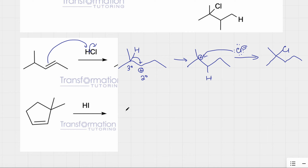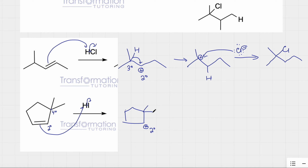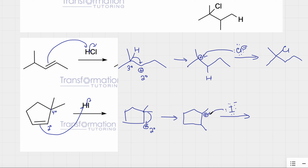Here again, the initial carbocation would be secondary, but right next to it is a quaternary carbon — more substituted. When I take the hydrogen and give electrons to iodine, the positive charge forms on the secondary carbon. Since this quaternary carbon has no hydrogens, I move a methyl group to the carbocation. The methyl migrates over, and the neighboring carbon now bears the positive charge. I add the iodide ion there, and that's my final product.